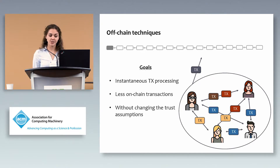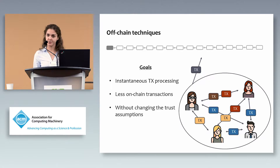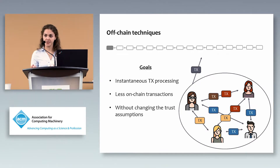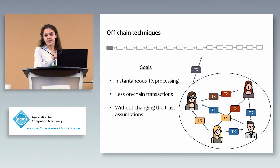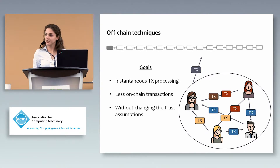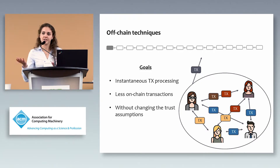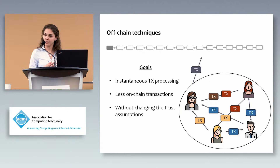One way to tackle this problem is to use off-chain techniques. The goal is to achieve instantaneous transaction processing by not posting every transaction on the blockchain, but letting parties execute a protocol between each other and then posting only a small amount of information to the blockchain about their trading. Importantly, we don't want to make any additional trust assumption — the only trust comes from the blockchain itself.